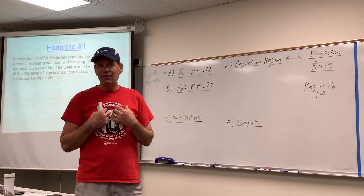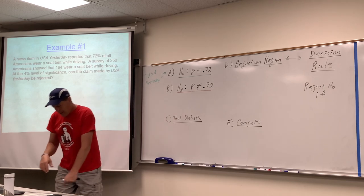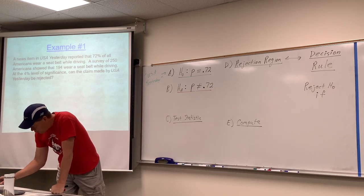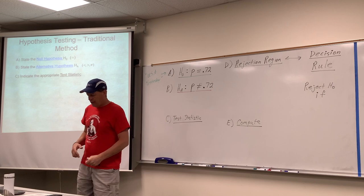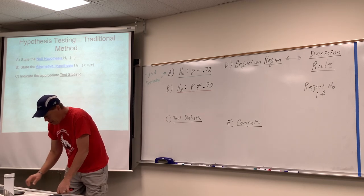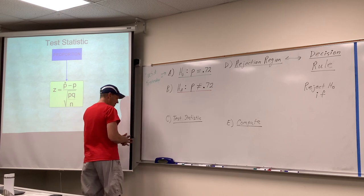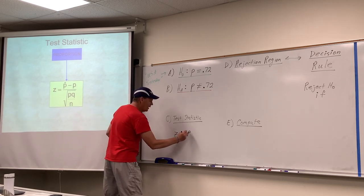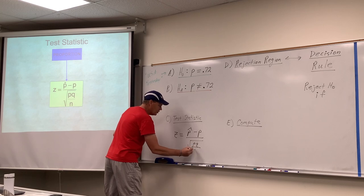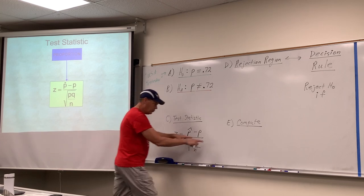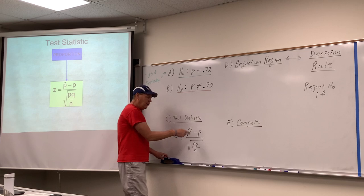In my experience, after people have seen six of these they really understand it well, so hang with me if it isn't making sense quite yet. For step C, the test statistic: when we do a hypothesis test we plug numbers into a test statistic, and for a proportion it's always going to be the very same test statistic. We'll plug numbers into it when we do the compute step.